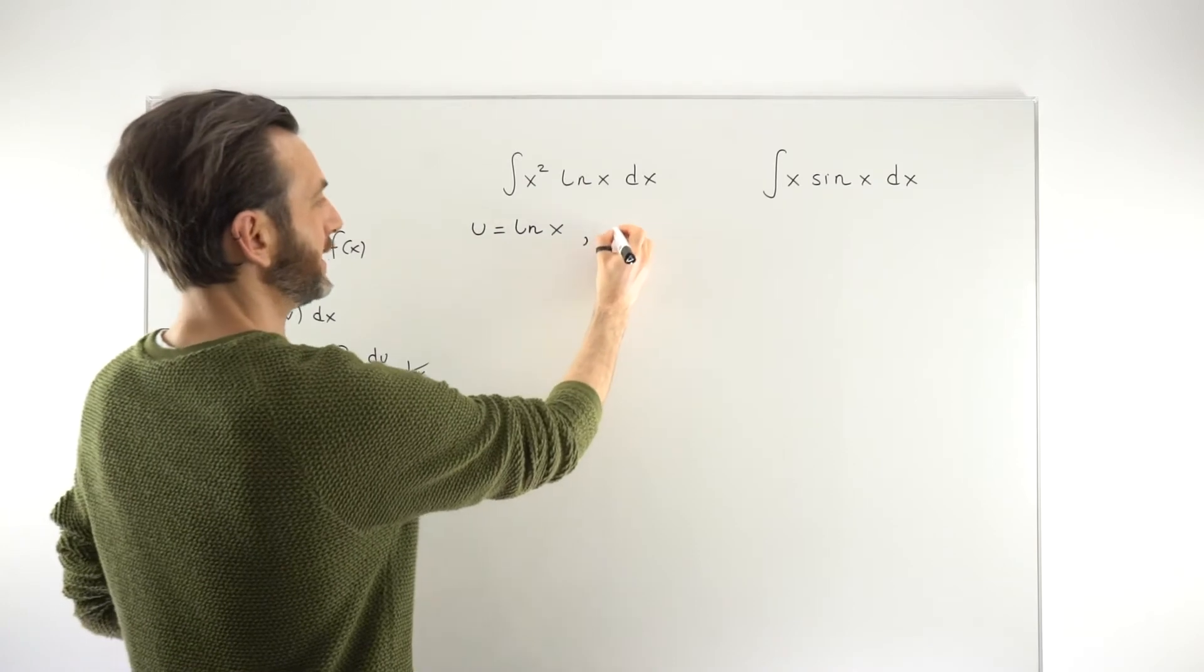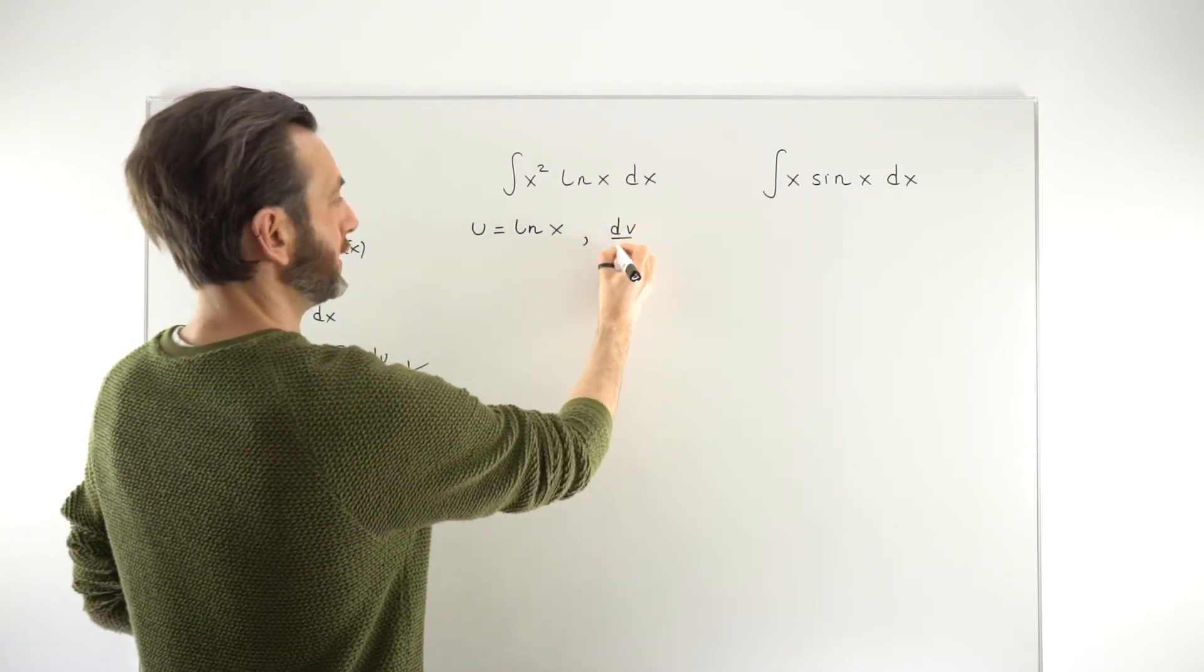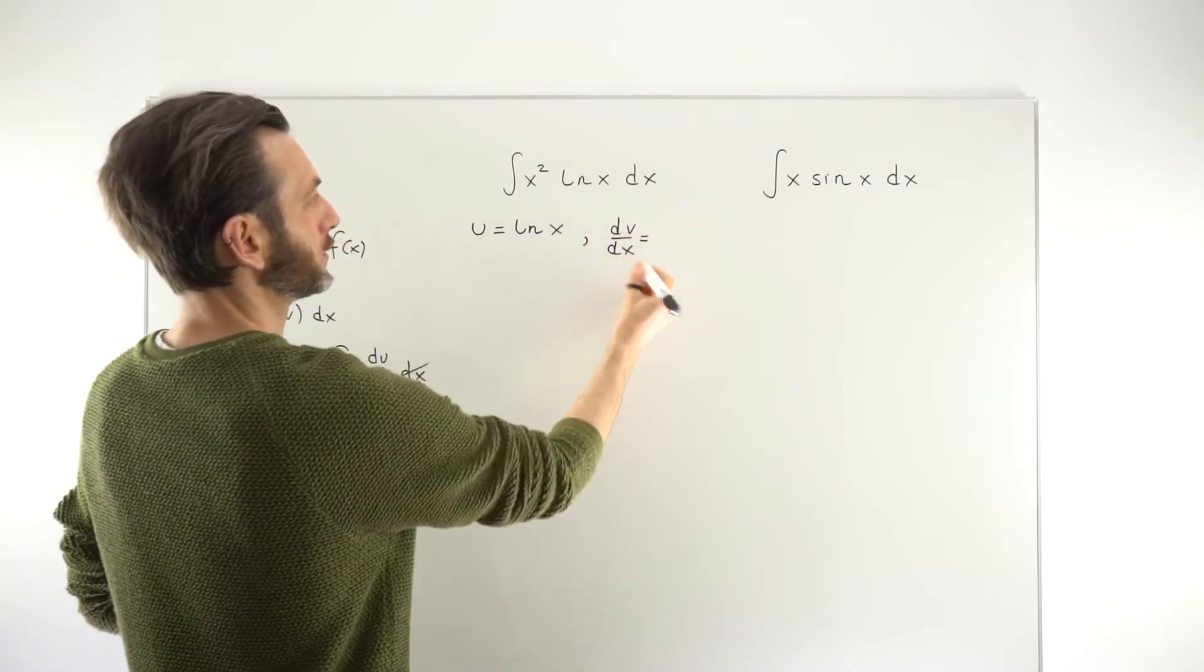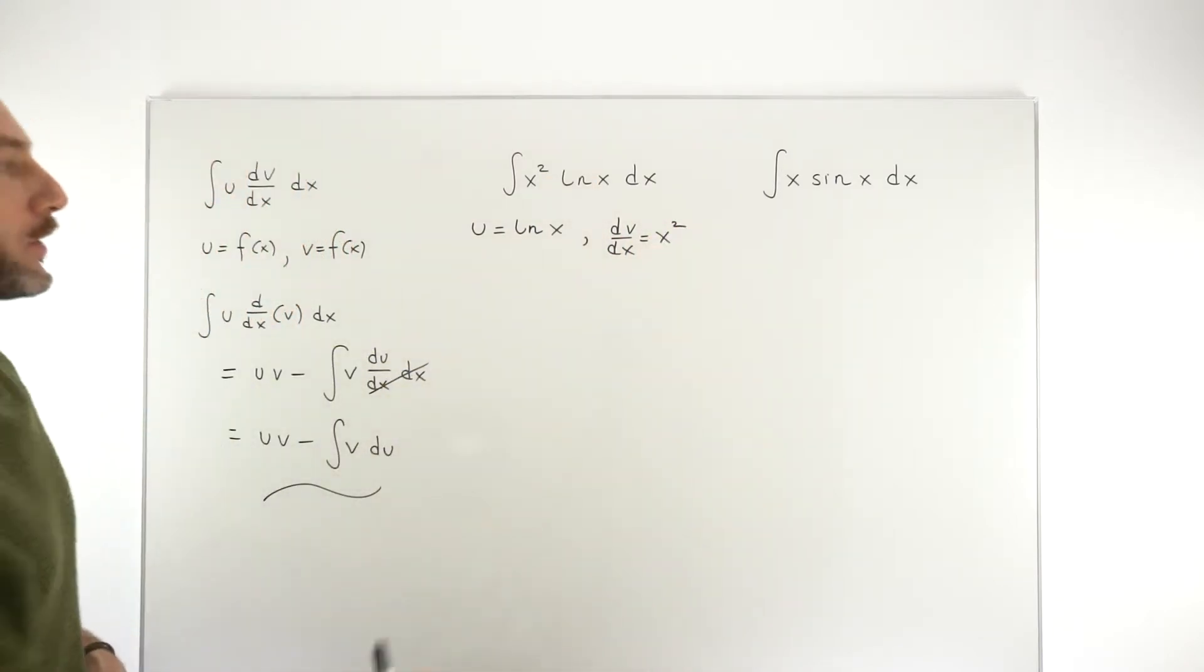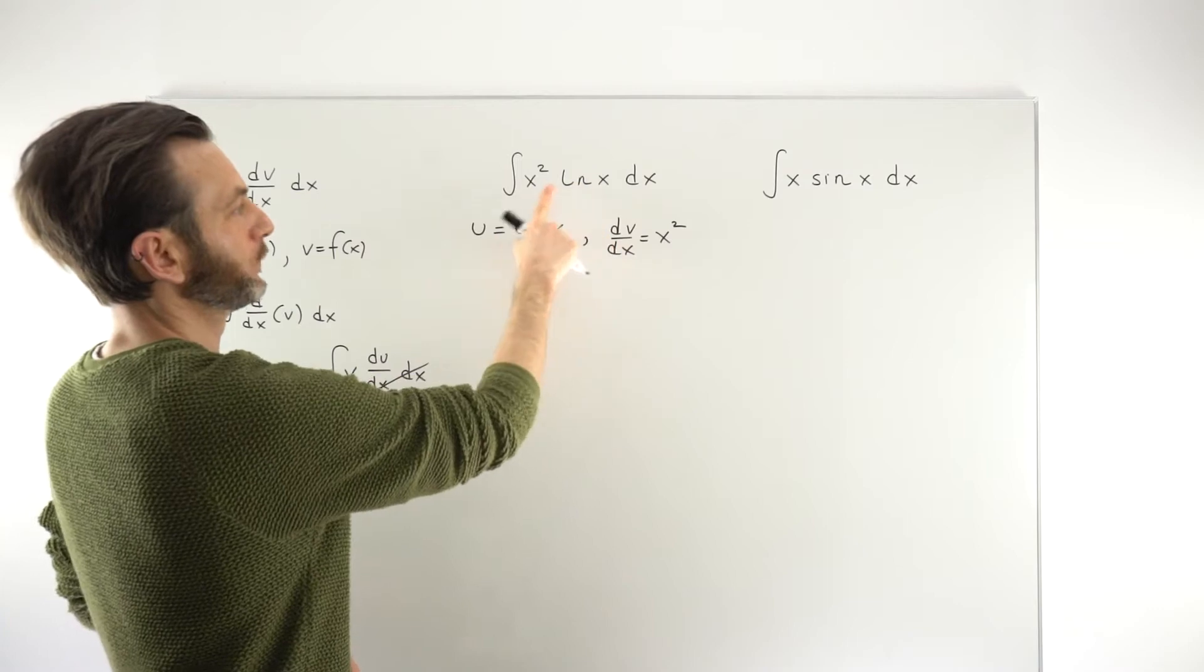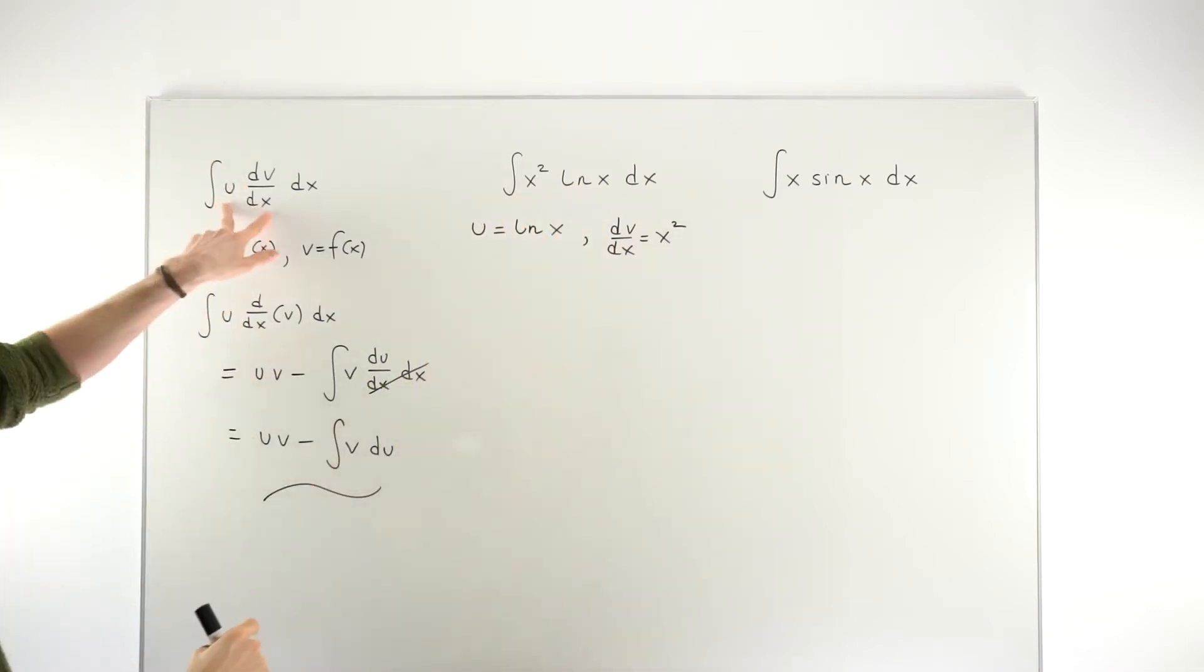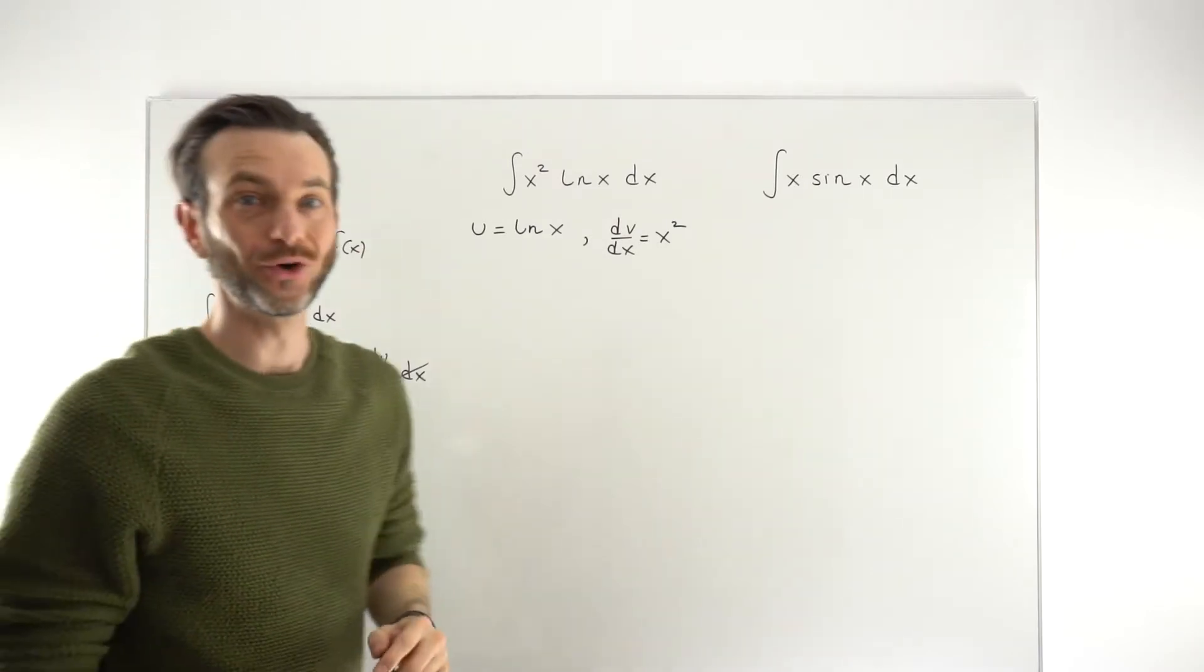So we're going to assume that we can let our u function be ln x. And then we're going to set our dv, dv/dx if you want to call it that, dv to the other function, which is x squared. So all I've really done there is chosen this guy to be u, this to be dv, just to match the format in the general formula for integration by parts.